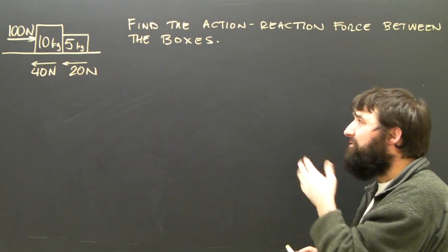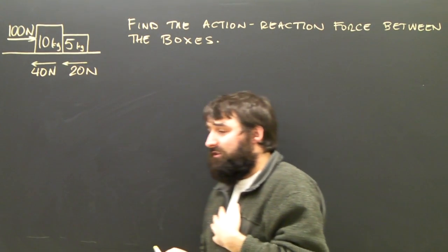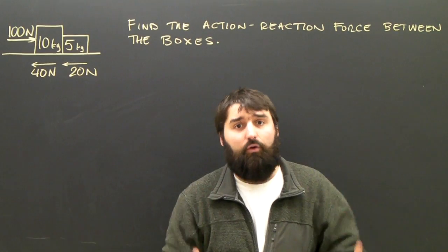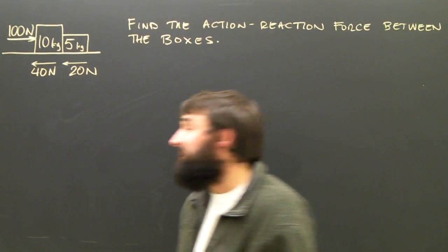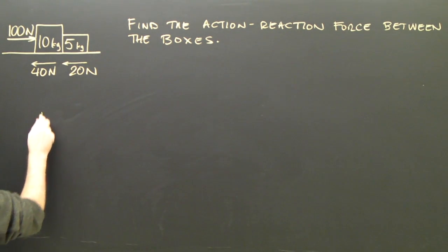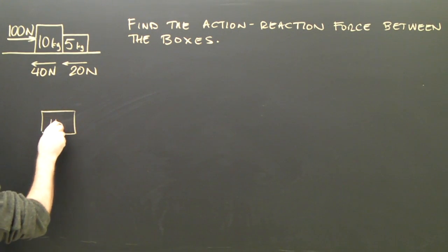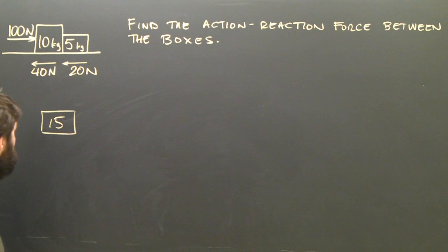Before we can do any of that, we're going to have to find the acceleration of the whole system. Assuming the boxes are rigid, that they don't collapse at all, we can assume their accelerations are the same. So I'm going to draw a free-body diagram for the whole thing. The whole thing has a mass of 15 kilograms.